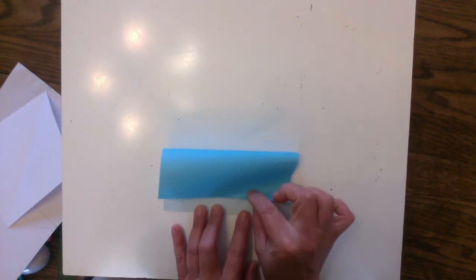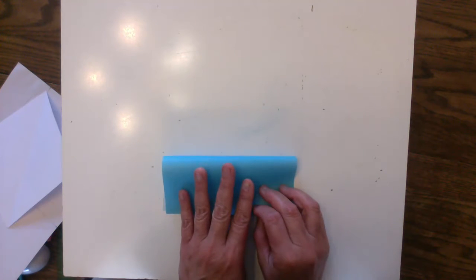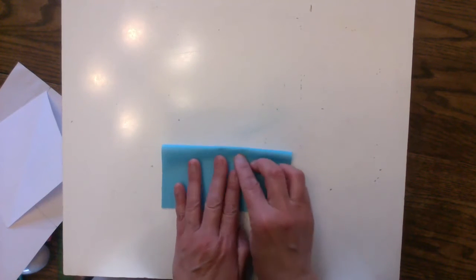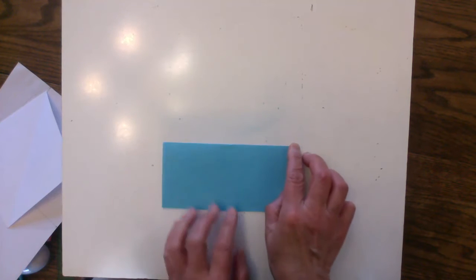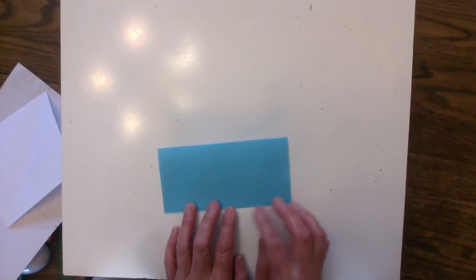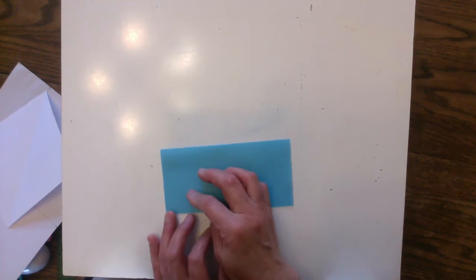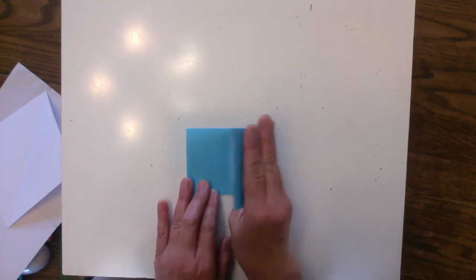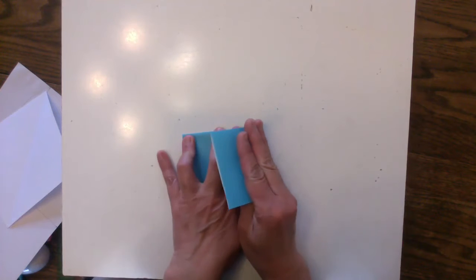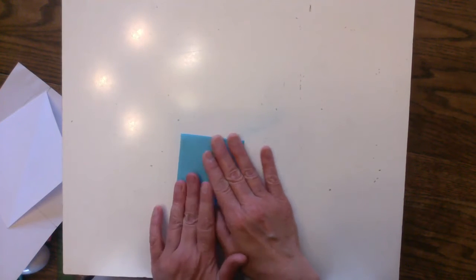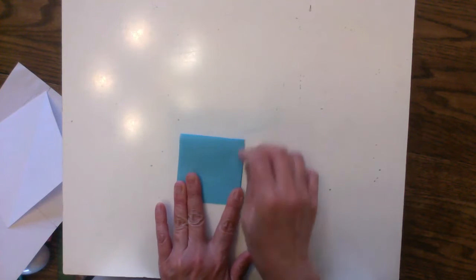First we're going to bring the top half down and fold it into half like this. So match the bottom corners. And then fold it sideways this time and make it into a smaller square.